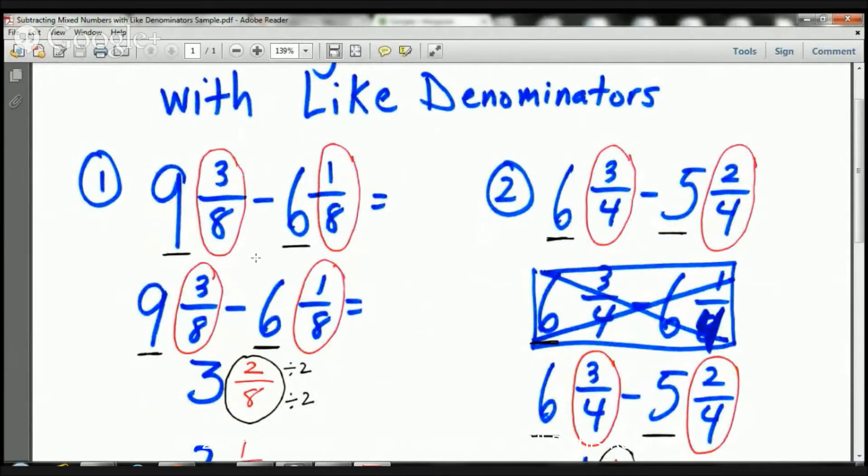What's a mixed number? A mixed number has a whole number like this 9 here and this 6 here. That's a whole number. It's a complete number. And a mixed number has a whole number and a fraction. So this mixed number is 9 and 3 eighths. This mixed number here is 6 and 1 eighth, okay?